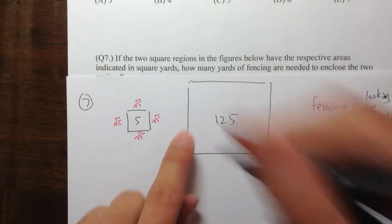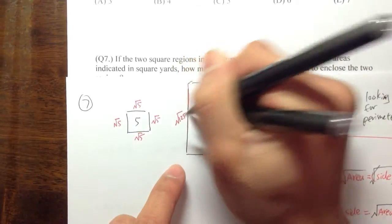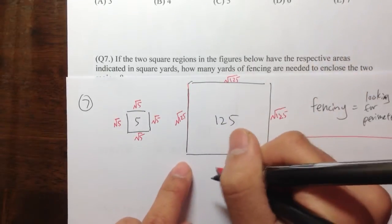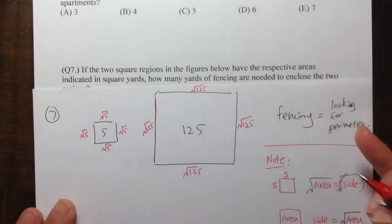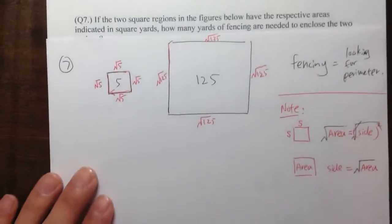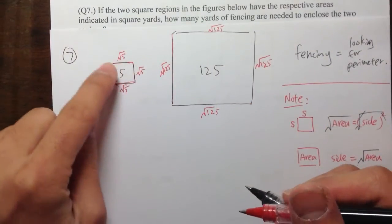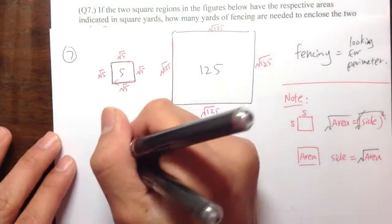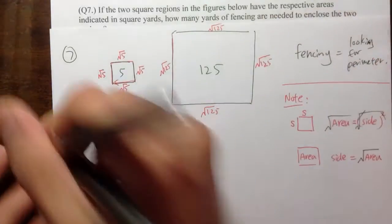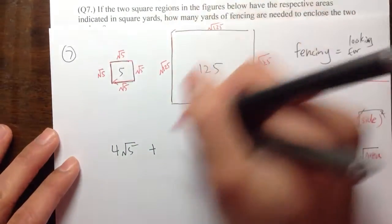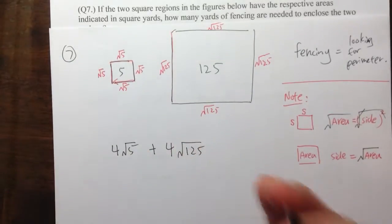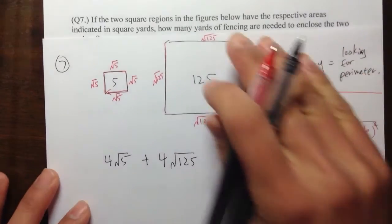Likewise, for the big square with area 125, each side will be square root of 125 on all four sides. We are trying to find the perimeter, so if I add all the sides of both squares: for the first one, the perimeter will be 4 times square root of 5, and for the second one, 4 times square root of 125. This will tell us how many yards of fencing are needed for these two regions.